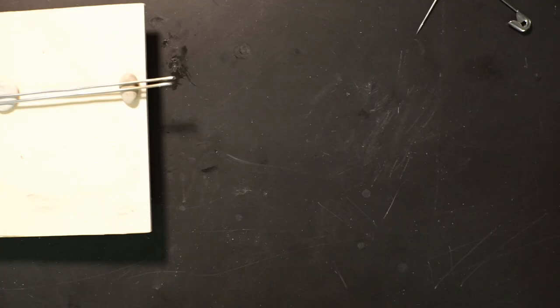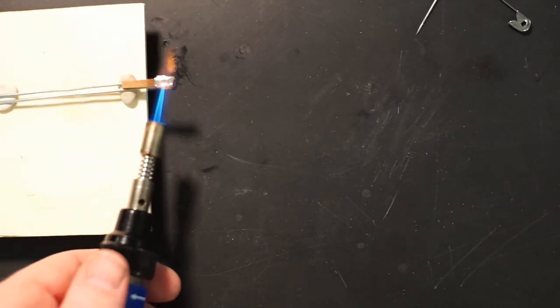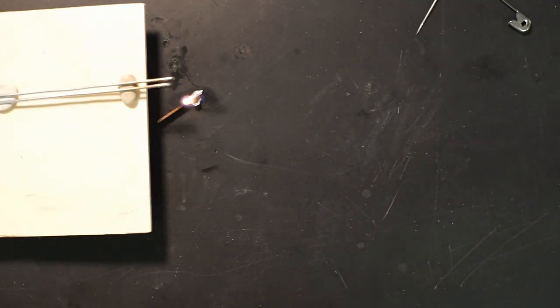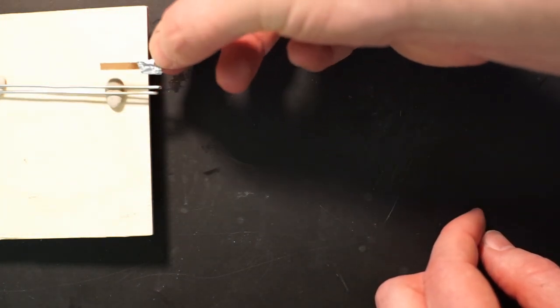So getting the vent holes along the short side of the match, so right along the narrow side if you will, seems to work a little better and getting them just the right depth is also really important.